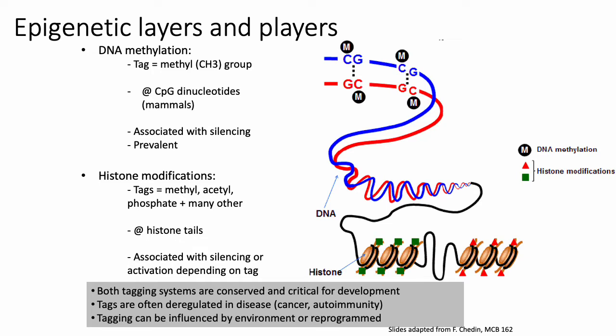Both DNA methylation and histone modifications are essentially context-dependent. The same modification can have different activating or repressing effects depending on what else is happening around the genome in the local area. Both DNA methylation and histone modifications are conserved systems used throughout all mammals and much of eukaryotes. They're really critical for development, and they're modifications that are oftentimes strongly associated with different types of diseases.